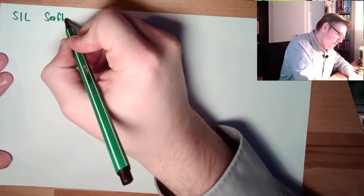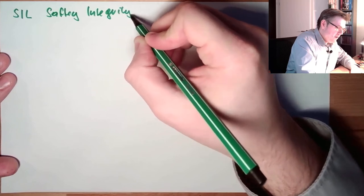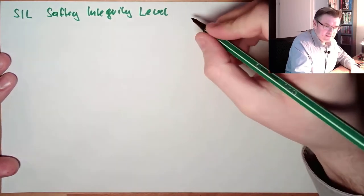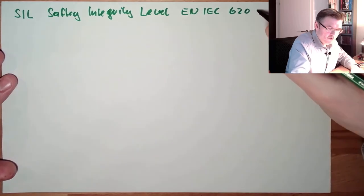Hello and welcome to a new video about safety. This time we are talking about the Safety Integrity Level — SIL. I will call it SIL from now on. This is according to the standard EN-IEC-62061.